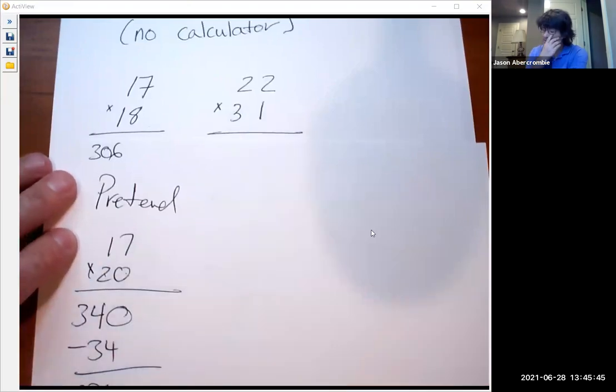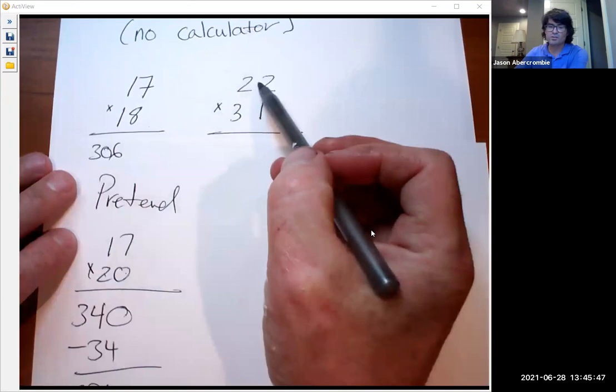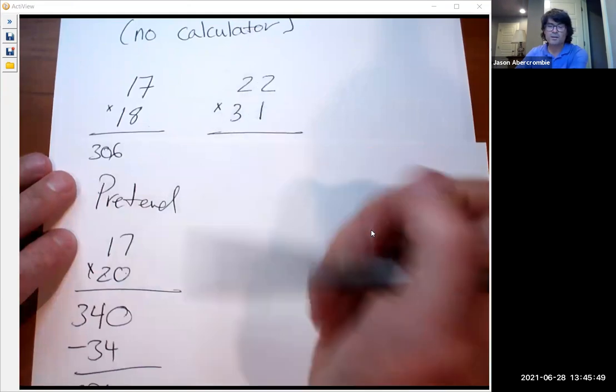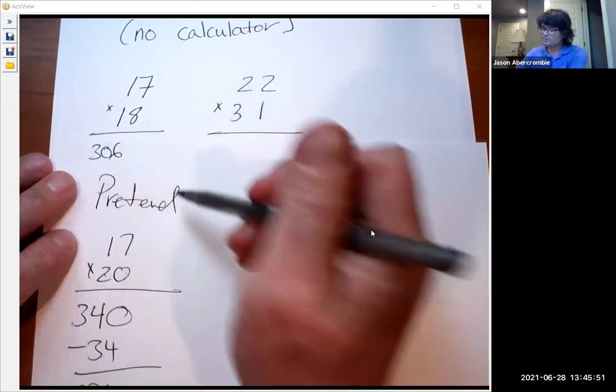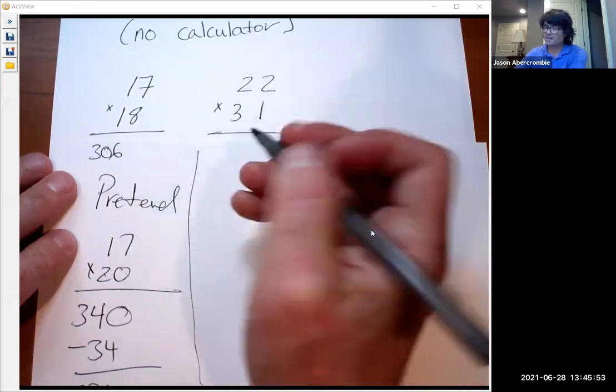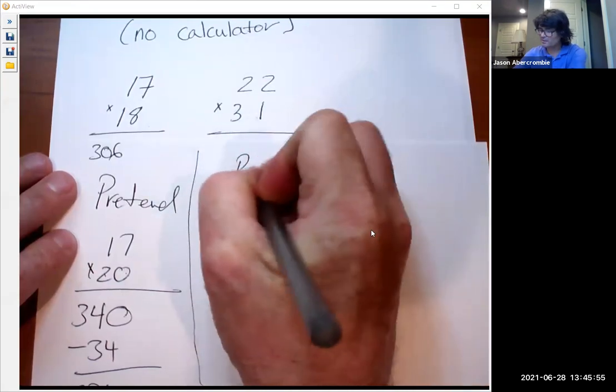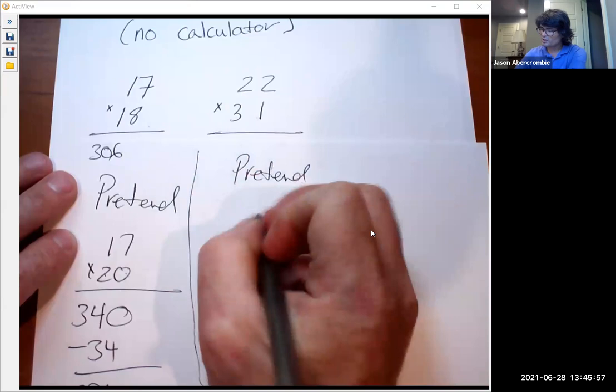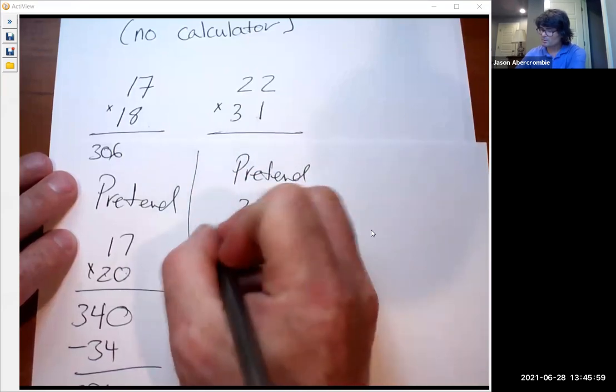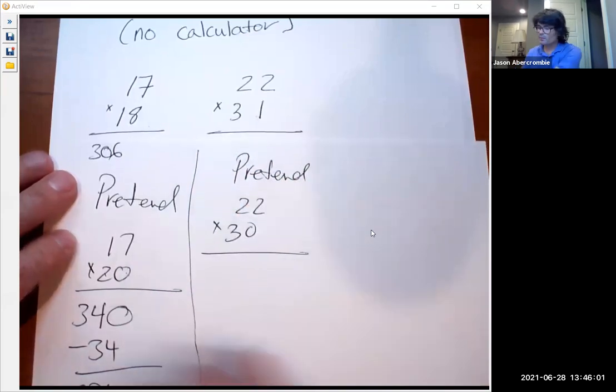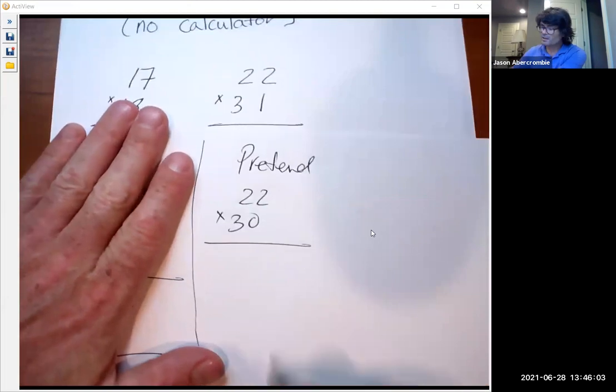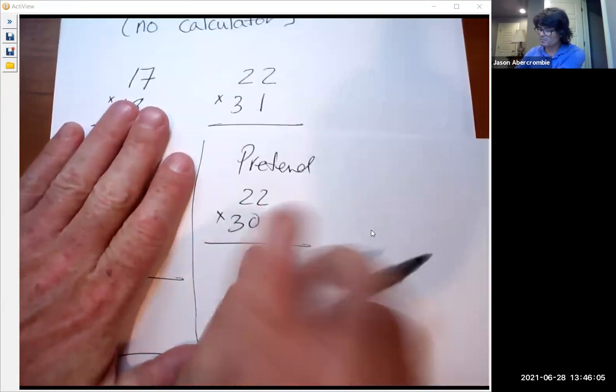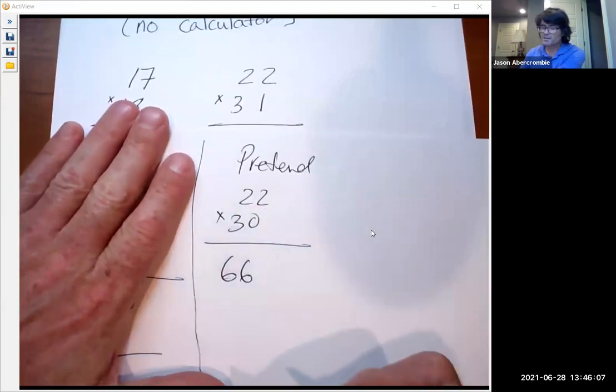So again you can choose to either bring this down to 20 or bring this down to 30, whatever. So I'll just bring this down to 30. We're going to pretend this is 22 times 30. The way you do 22 times 30 is you do 3 times 22, 66, and then add your zero. So 660.